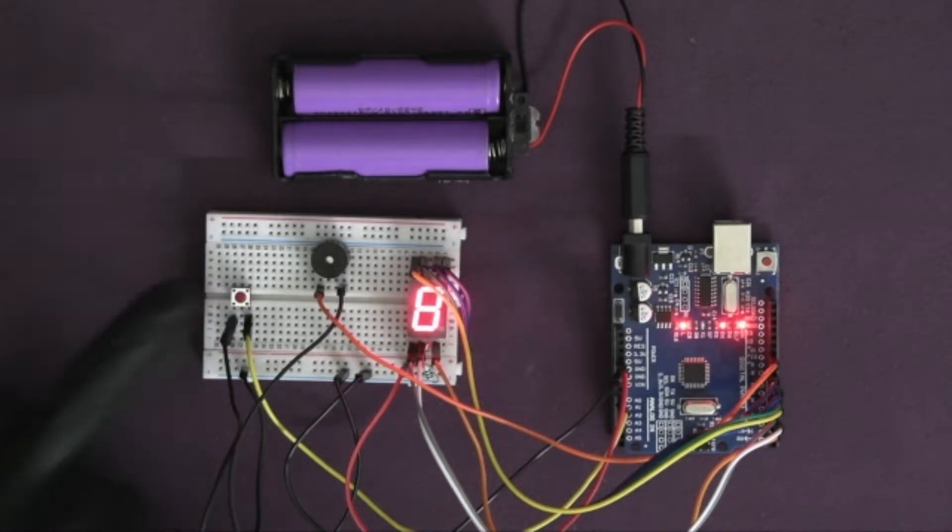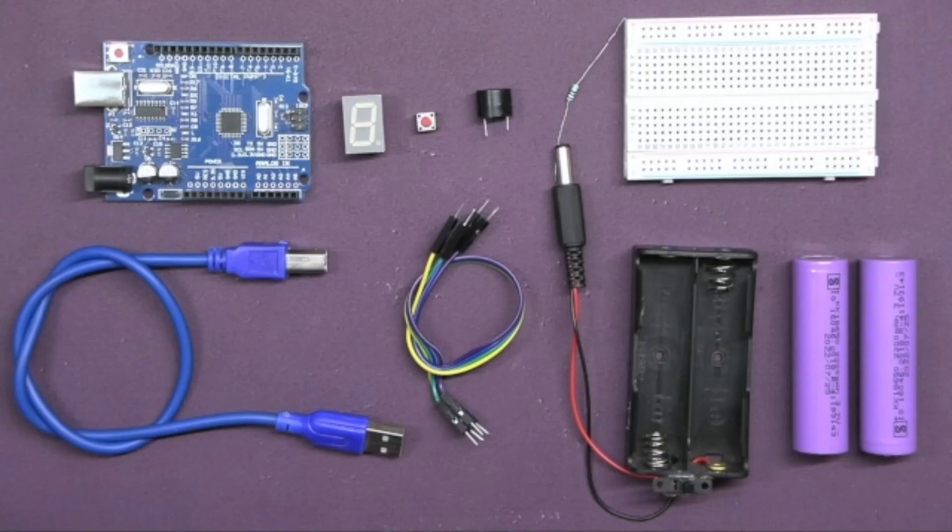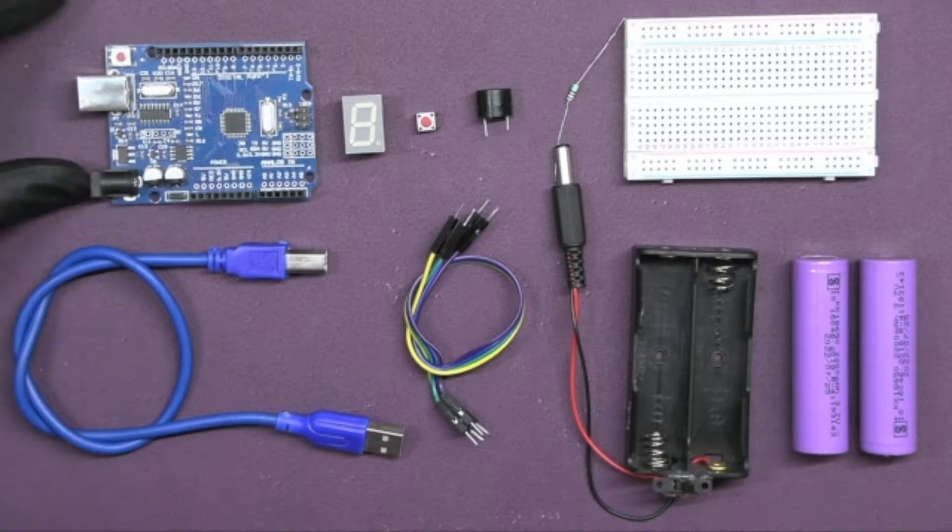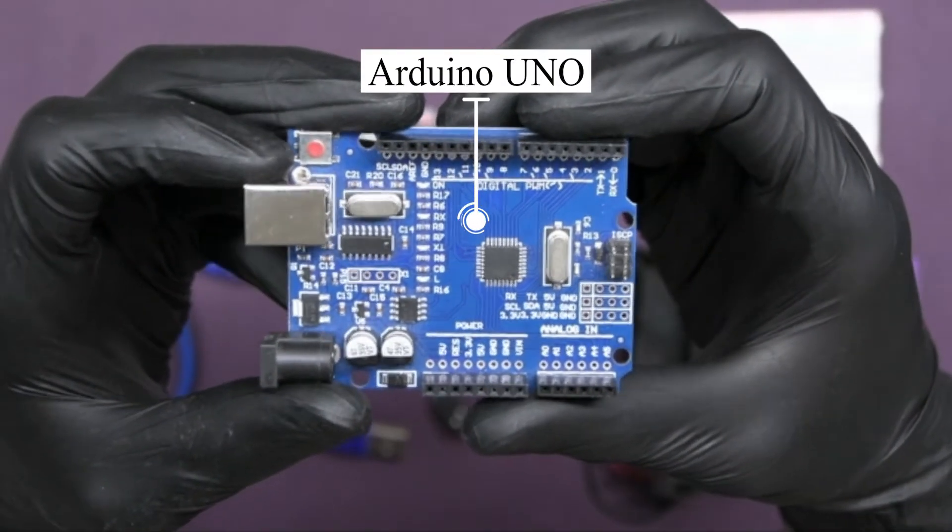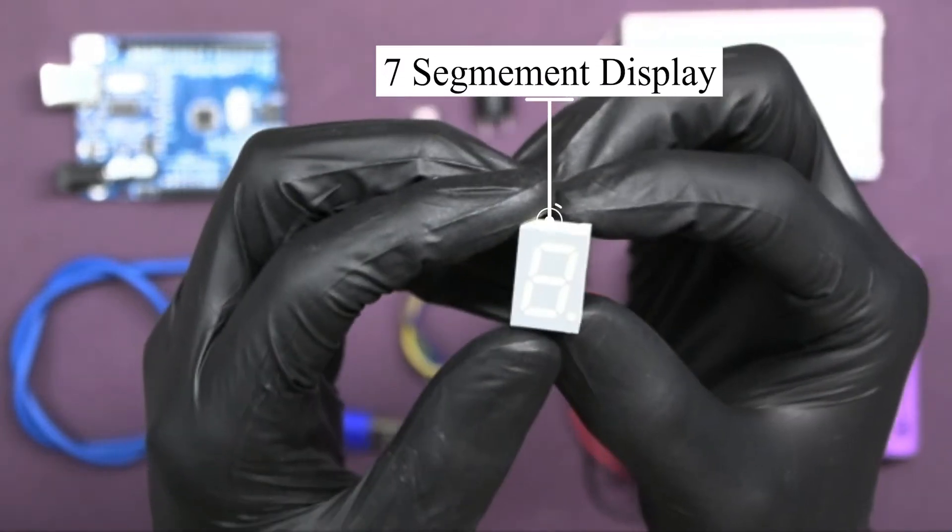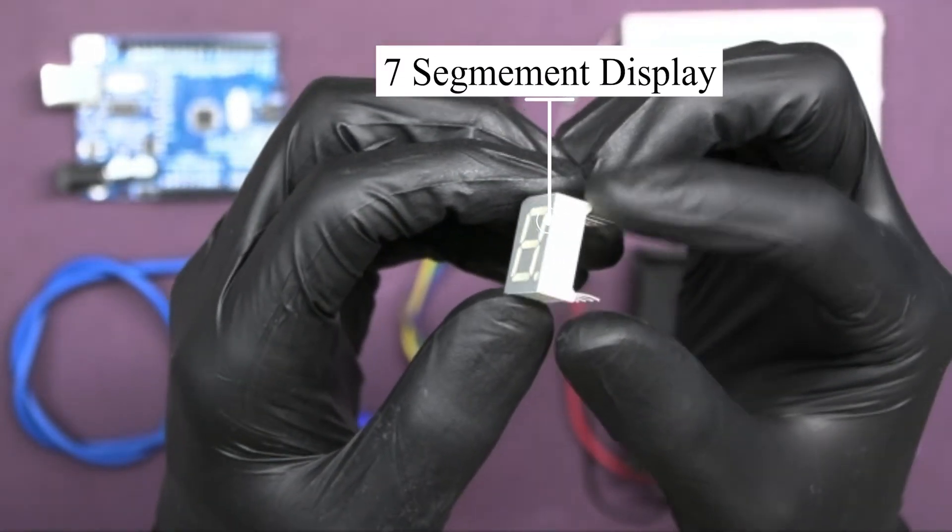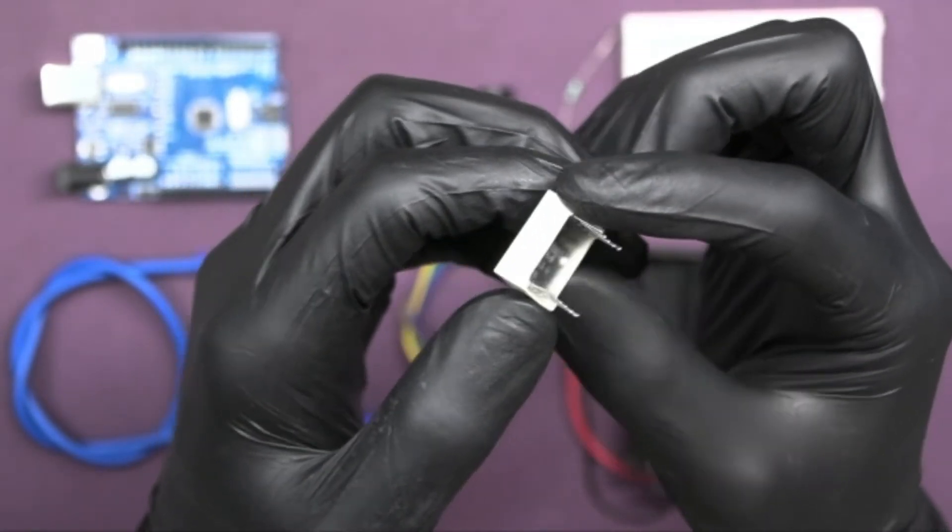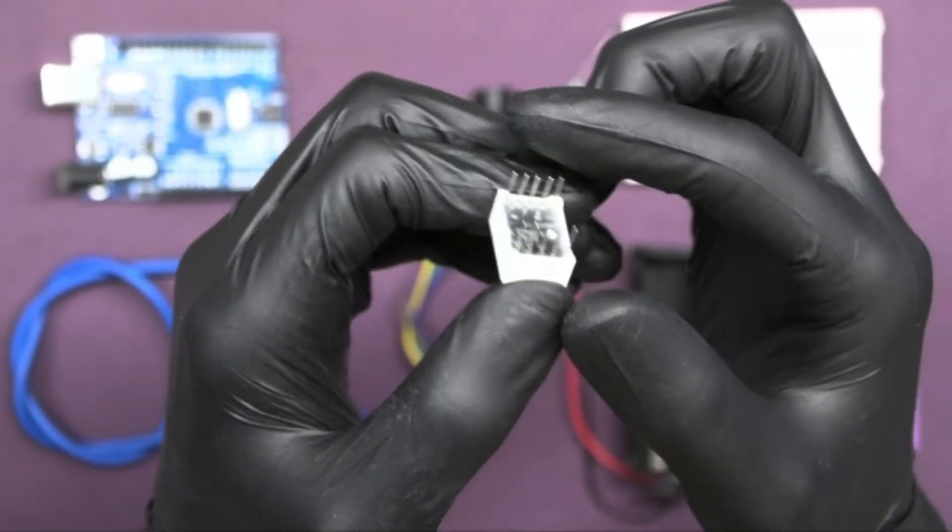Let's start building our own digital dice. Here are the components you'll need: one Arduino Uno board, next we have a seven segment display. If you want to know more about seven segment display, click above on the i button.